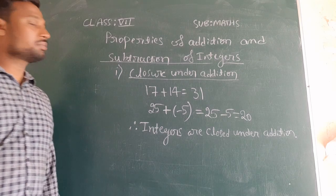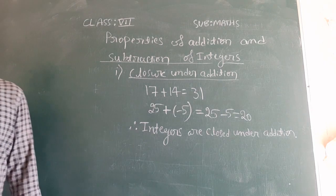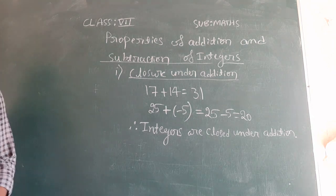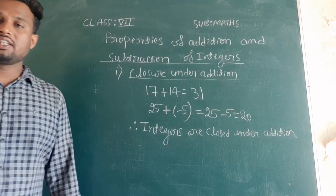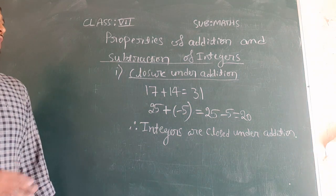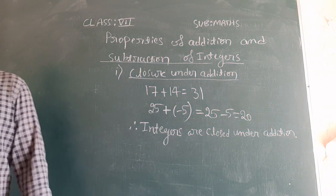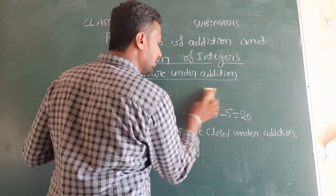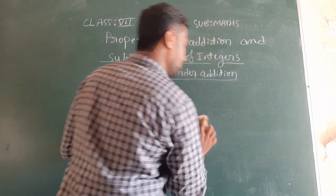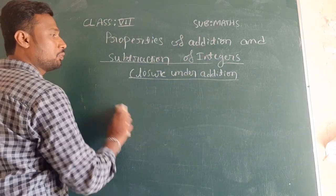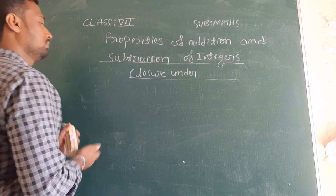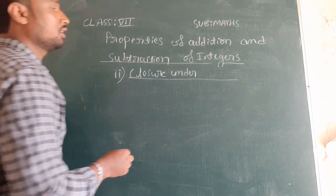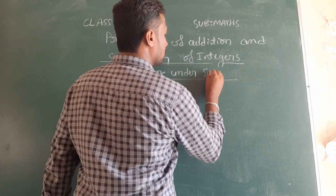Now we will see closure under subtraction. Just watch this video and write, and while writing, write some more examples — at least another five examples for closure under addition. Now we will check the closure property for subtraction.